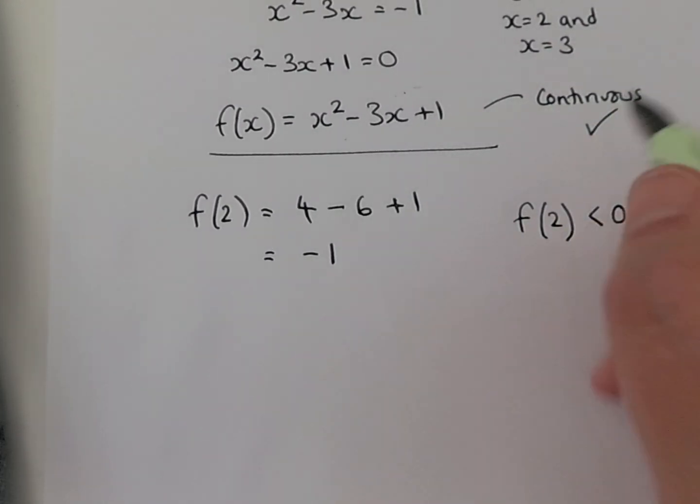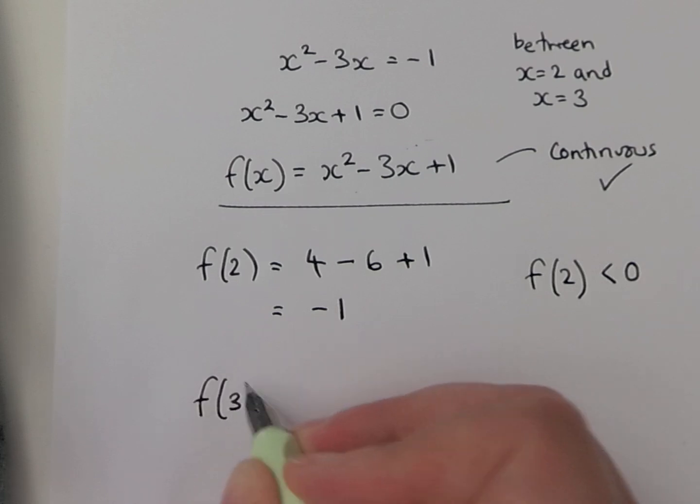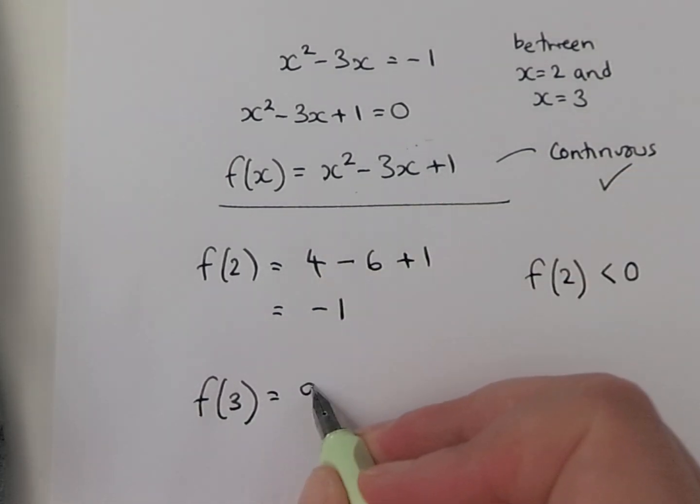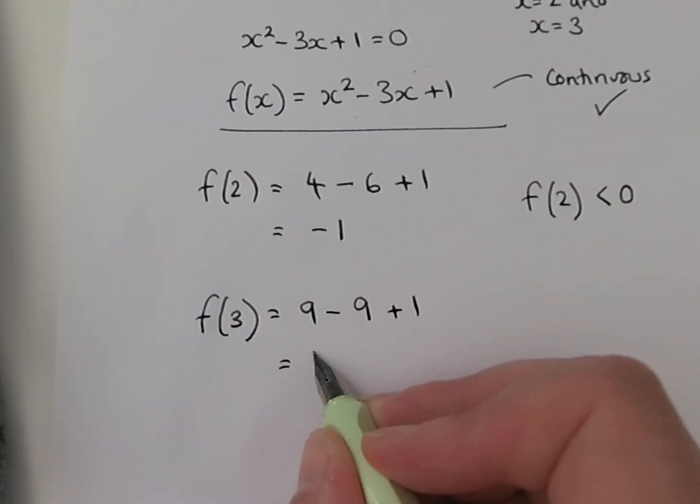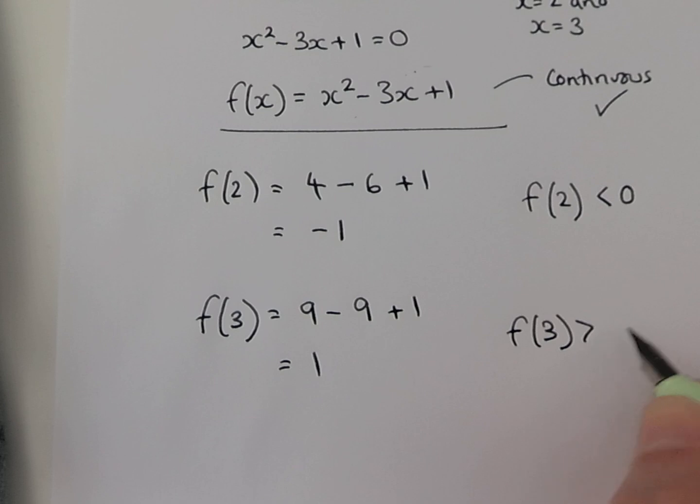Next I'm going to substitute in 3. So f of 3, 3 squared is 9 minus 3 times 3 which is 9 plus 1. Well, that's going to give us positive 1, so f of 3 is bigger than 0.